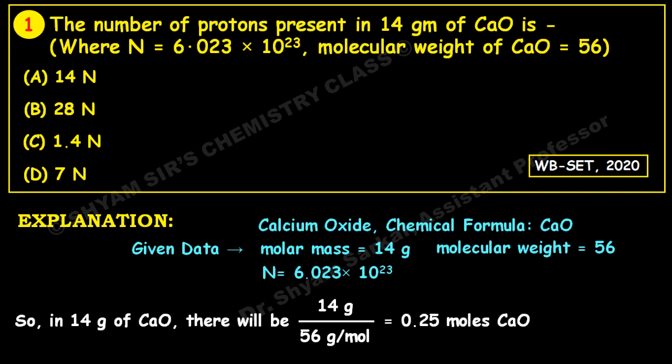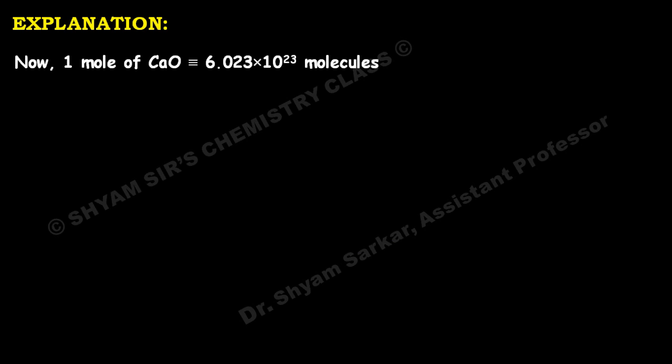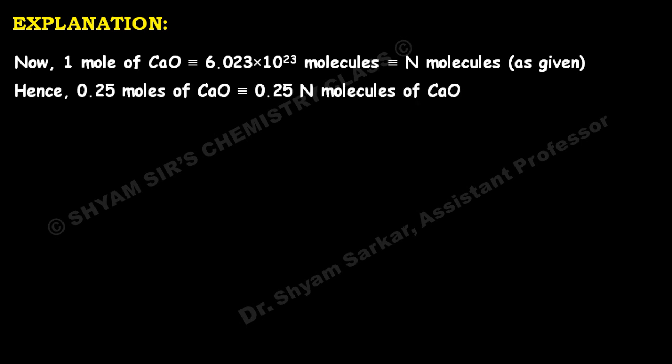One mole of calcium oxide is equivalent to 6.023 × 10²³ molecules, which is Avogadro's number — given here as N molecules. So we consider 1 mole CaO = N molecules. We have 0.25 moles of calcium oxide, so that is equivalent to 0.25N molecules of calcium oxide.